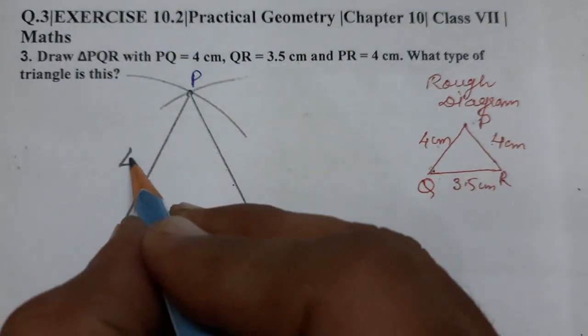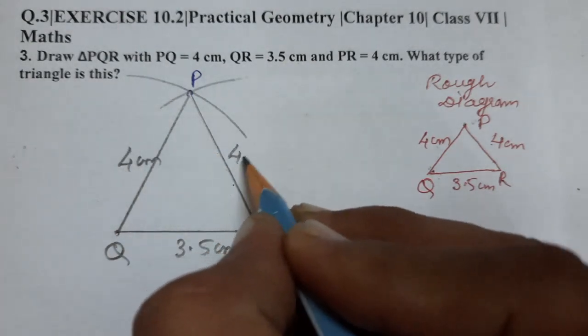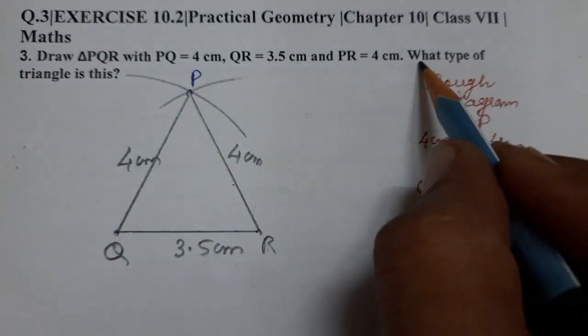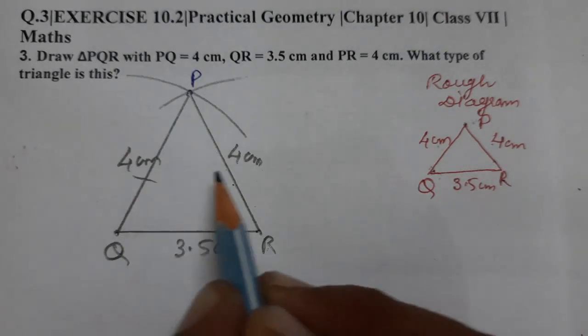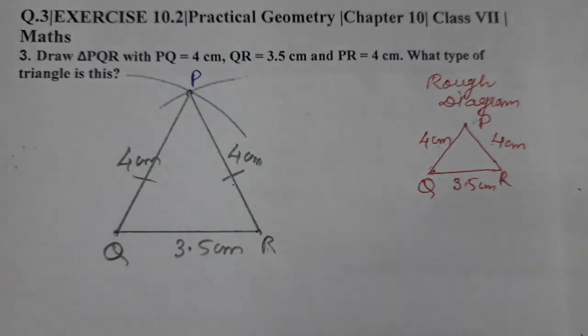This is 4 centimeter. This is also 4 centimeter. Now, question is what type of triangle is this. Two sides are equal and whenever two sides are equal it is an isosceles triangle.